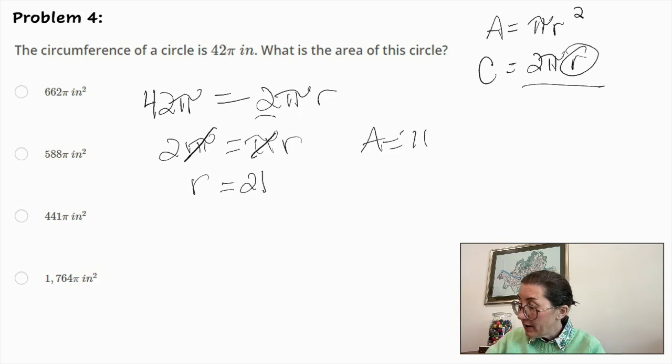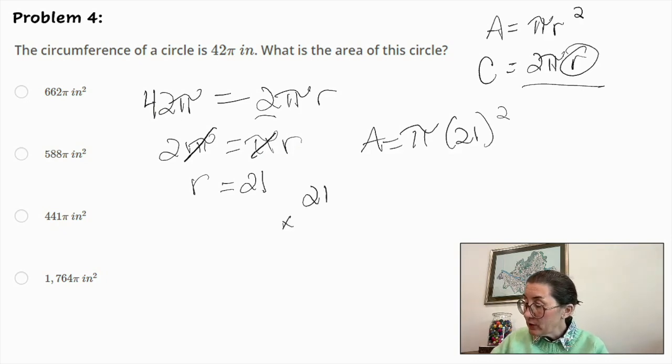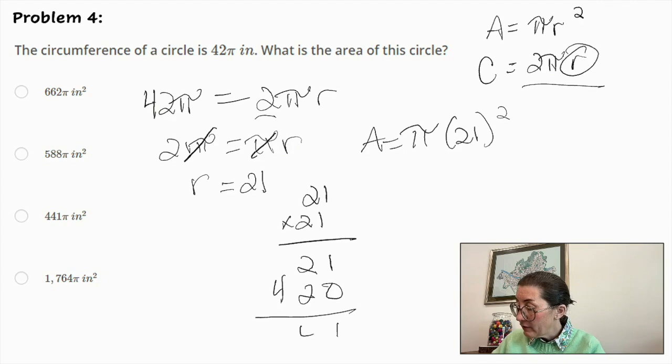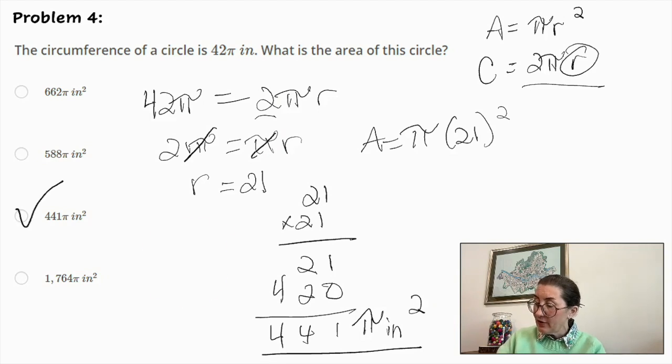Area equals pi r, in this case 21 squared. So we need to find the square of 21, which is 21 times 21. 1 times 1 is 1, 1 times 2 is 2, 2 times 2 is 4. And we have 44, and we have 441 pi inches squared will be our answer. And there you have it.